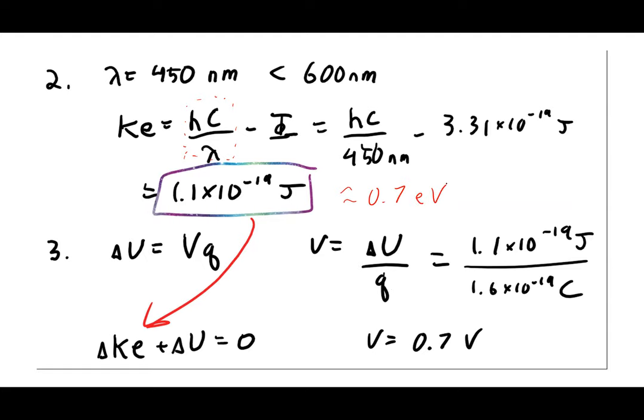For part three, what would the stopping voltage be? Remembering that the change in potential energy equals voltage times charge, I set that potential energy to perfectly cancel the kinetic energy and divide by the electron charge to get the voltage: 0.7 volts. It's not a coincidence that the energy was 0.7 eV and the stopping voltage is 0.7 volts — one electron overcoming a 0.7-volt potential difference is exactly what 0.7 electron volts means. That's why the eV unit is so convenient.